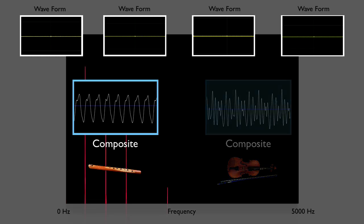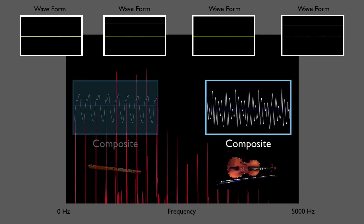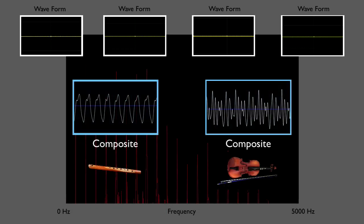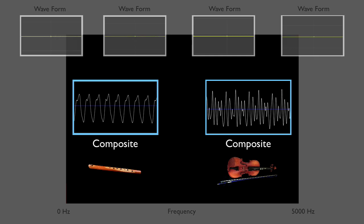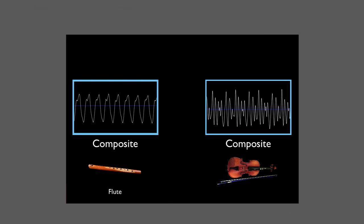The number and different levels of overtones for each instrument makes all the difference. You can see that the composite waves from the flute and the violin look very different. And that difference is quickly picked up by your ears, so quickly you don't even think about it.